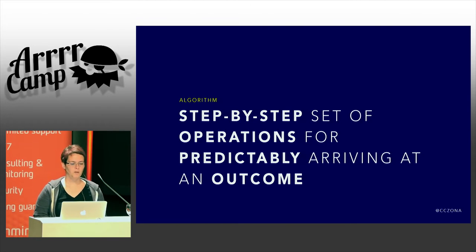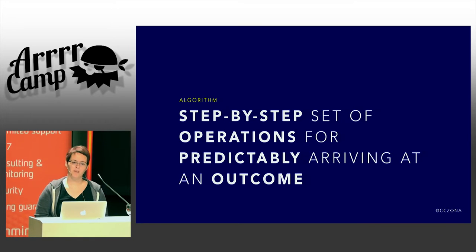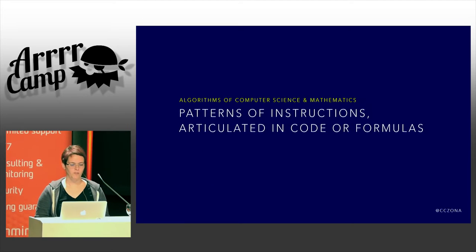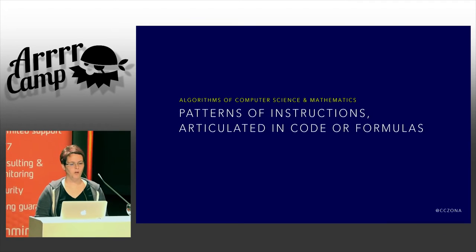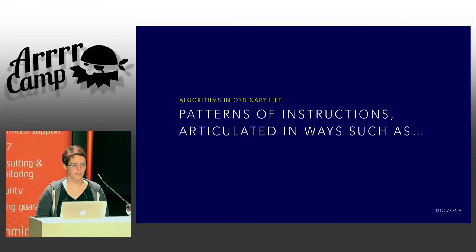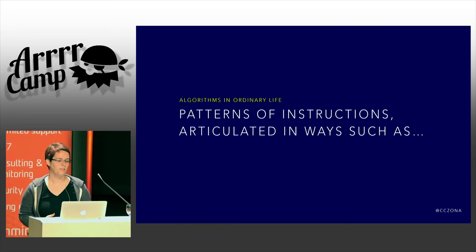Thinking about what an algorithm is at a really basic generic level, it's just a step-by-step set of operations for predictably arriving at an outcome. Usually we think of this in terms of CS or mathematics, where it's patterns of instructions articulated in either code or formulas, but you can also think of algorithms in everyday life — patterns of instructions articulated in all sorts of ways, including recipes.